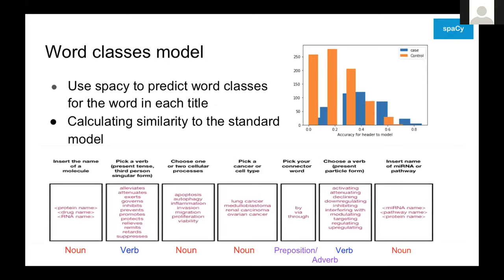We looked more into word classes and set up a model based on a paper we were given that said titles would most likely be structured as: noun, verb, noun, noun. We compared all title word classes to this model and tried to see how accurately they match. As you can see in the corner, orange bars are controls and blue ones are cases — they have somewhat of an overlap, so we don't think this is the best way to identify the fake papers.